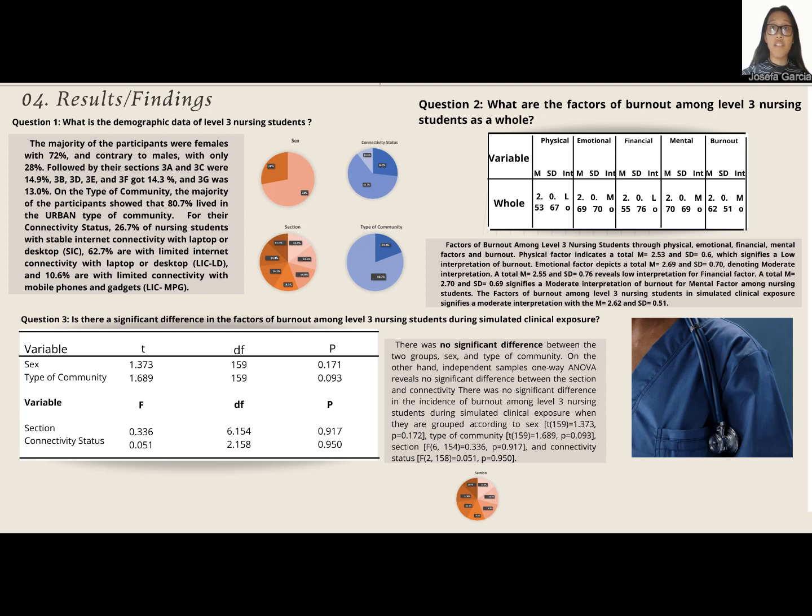There was no significant difference between the two groups, sex and type of community. On the other hand, independent variables one-way ANOVA reveals no significant difference between the section and connectivity status in the dependent sample, the incidence of burnout among Level 3 nursing students during online clinical exposure.